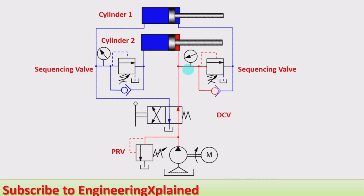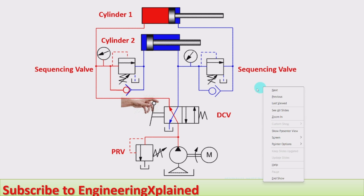The direction control valve controls the extension and retraction. When the direction control valve is at the left envelope, fluid from the pump flows through the direction control valve and goes to the piston end side of cylinder one, causing extension of cylinder one. There is another line connected to the sequencing valve.